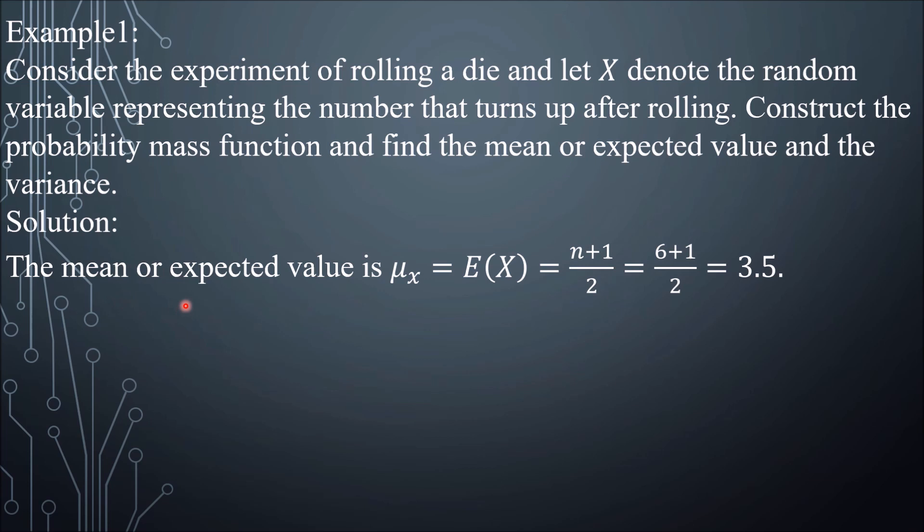For the mean, follow the formula (n + 1)/2. Since n = 6, we have (6 + 1)/2 = 3.5. The mean of this uniform distribution is 3.5.